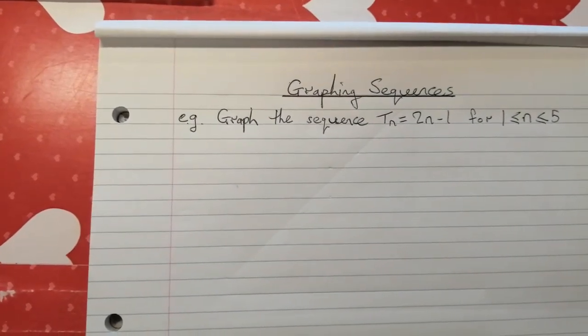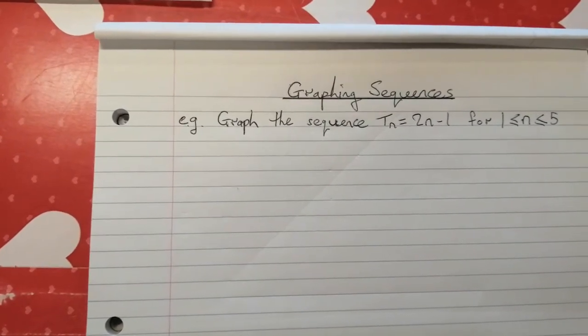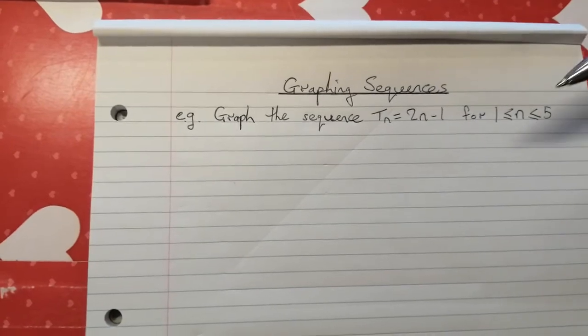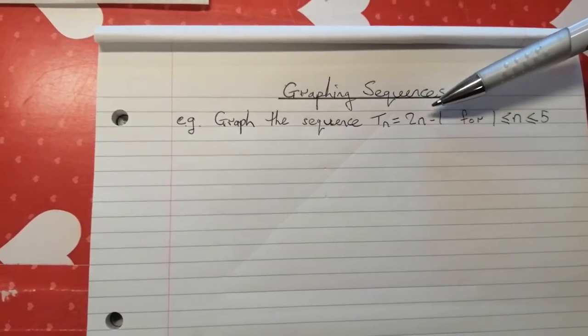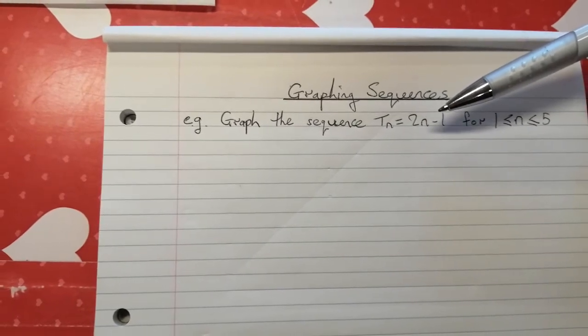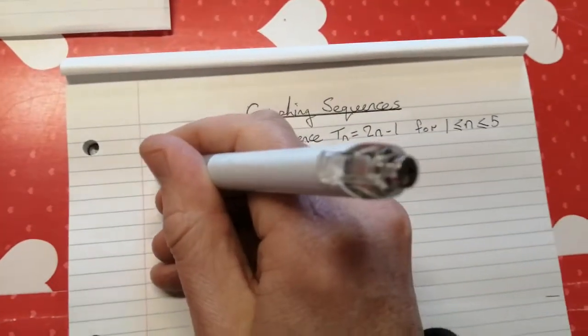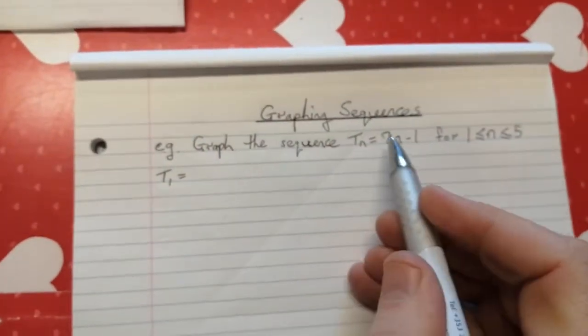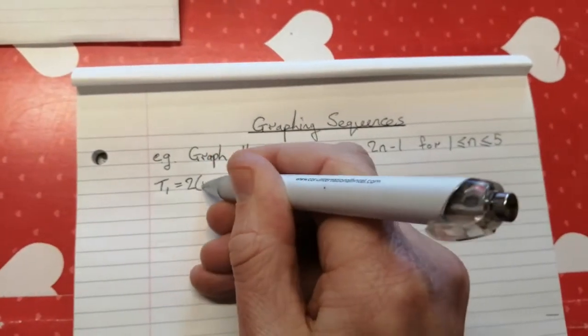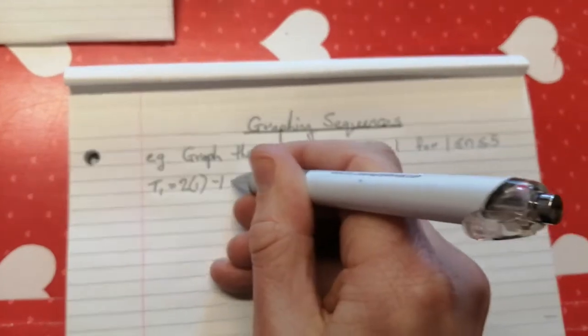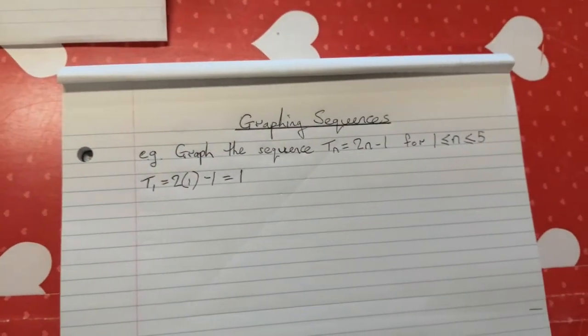So the first thing we're going to need in order to graph it is the points we're going to plot. And in order to work out what the points are, we're going to actually have to use this general term to find the first five terms in this sequence. So to do that, all we have to do is say T₁ is equal to, and we need to sub in 1 here to the general term. So it's 2 times 1 minus 1. So 2 ones are 2, take 1 is 1. So term 1 is equal to 1.